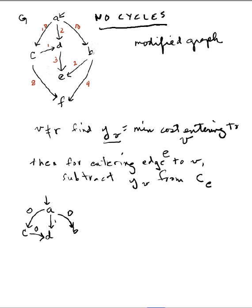E has two entering edges. Minimum cost is the two. So that will now have, I'm talking about vertex E, B to E will have cost zero and D to E will have cost one. Three minus two is one. For F, I've got two edges, four and eight, subtract four from both of those. So B to F will have weight zero and C to F will have weight four.